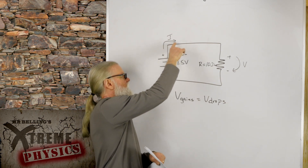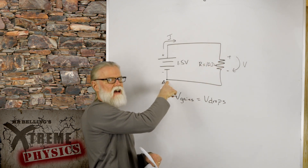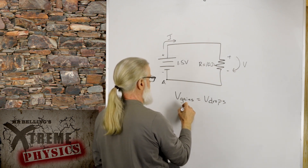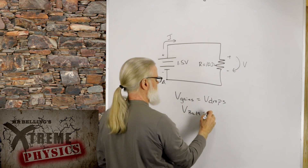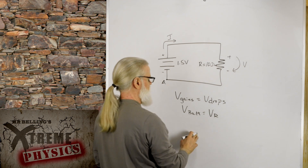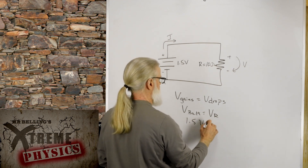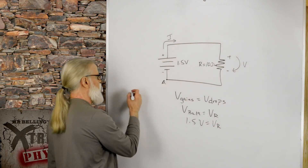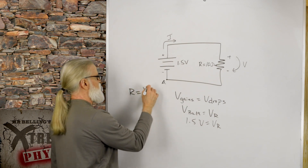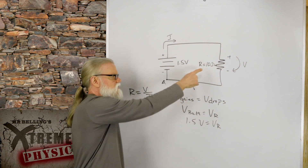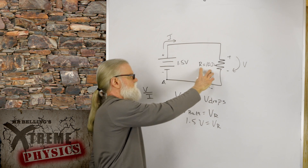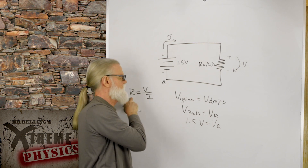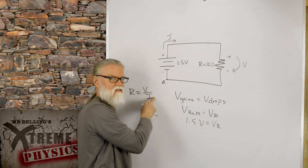The voltage gains equal the voltage drops — it has to be, it's a conservation of energy thing. If I start here and gain energy, I must lose that energy once I get back to the same point. So V_bat equals V_resistor: 1.5 volts equals the voltage across the resistor. I can figure out the current because from Ohm's law, R equals V over I.